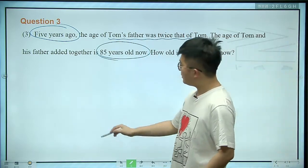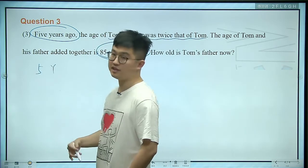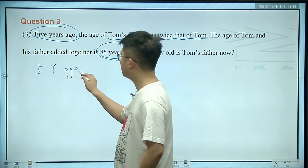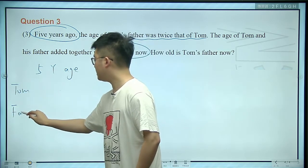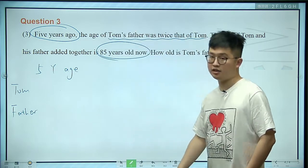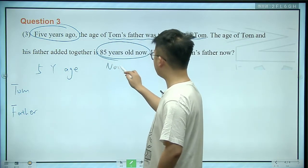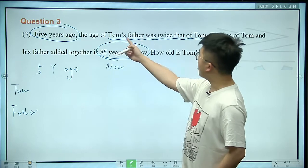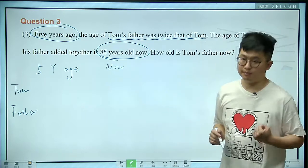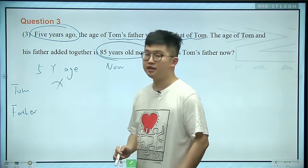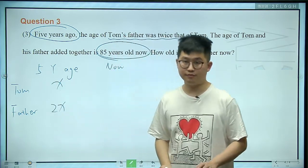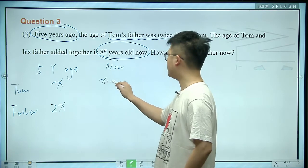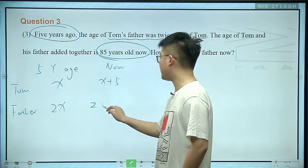So, 5 years ago and now — we have four blanks to fill in. We know that 5 years ago, Tom's father's age was twice that of Tom. So if Tom's age 5 years ago was x, then his father's age was 2x. Now, 5 years later, Tom's age is x plus 5, and his father's age is 2x plus 5.